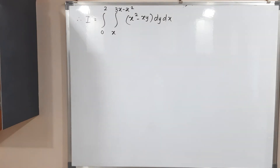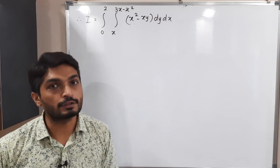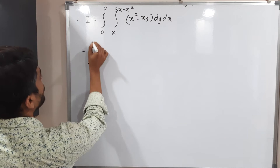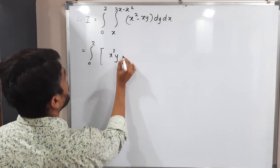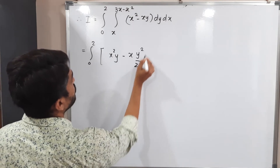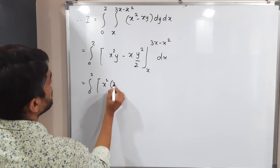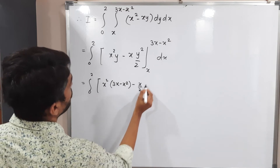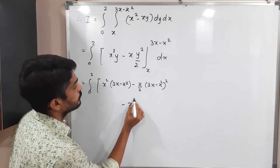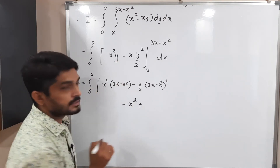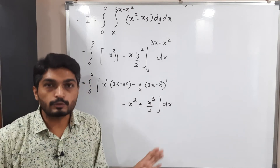By considering the limits and function, we set up the integral. The inner integration is with respect to y and the outer is with respect to x. Solving the inner integration: x² is constant, so its integral is x²·y, and ∫y dy = y²/2, with limits from x to 3x - x². Putting the upper limit 3x - x² and lower limit x, we get x²(3x - x²) - x·(3x - x²)²/2 minus x³ + x³/2.